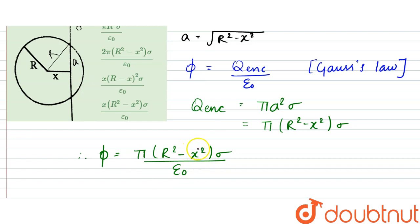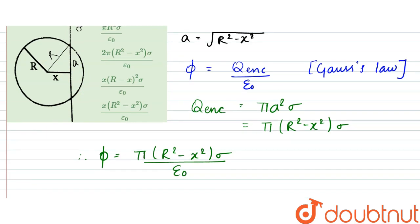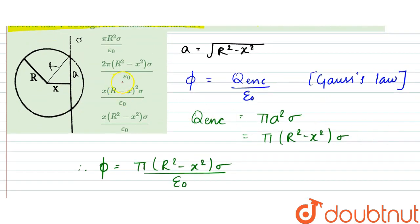So what we can write from here is that our answer would be pi into r squared minus x squared times sigma by epsilon zero. So this would be pi here. So this would be our answer, that is option B. Thank you.